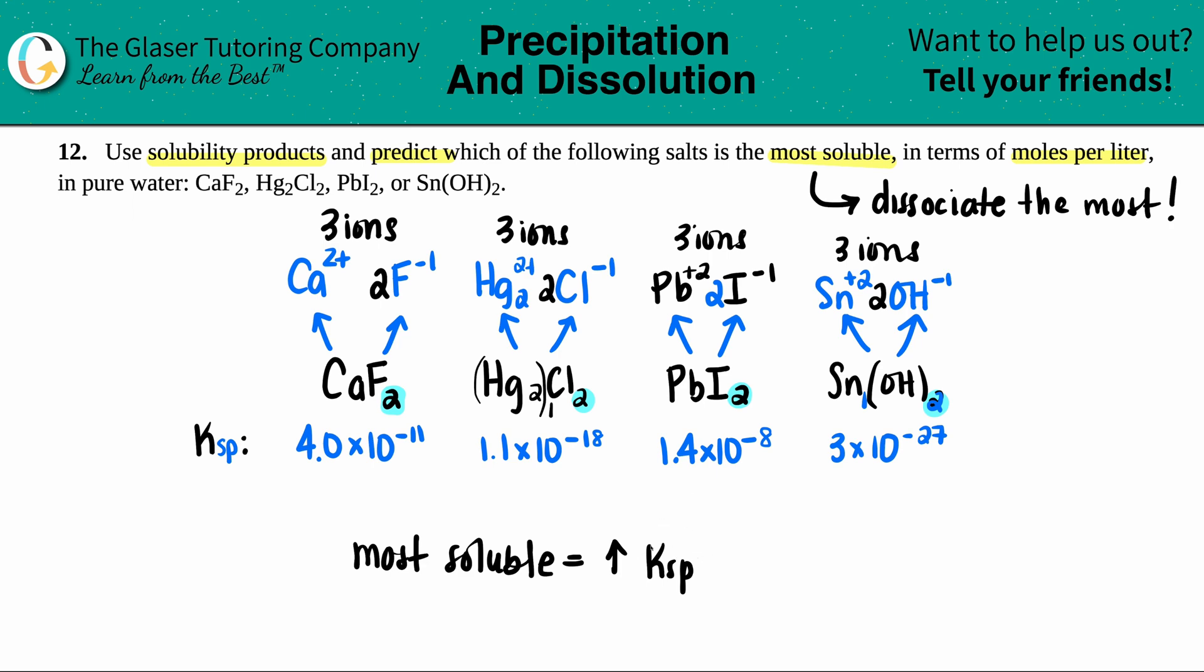So that kind of makes sense. Remember, high K values means at equilibrium, you favor the products. And that's what you'll dissociate the most. You'll have the most products. So in this case, you just have to look at those exponents. That's what's different. So I have a negative 11, negative 18, negative 8, and negative 27. The most soluble is the highest Ksp. So just pick the highest number out of the exponents. In this case, negative 8 is the highest out of negative 11, negative 18, and negative 27. So the most soluble would be PbI2.